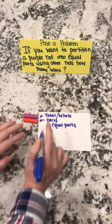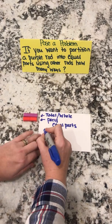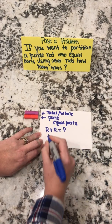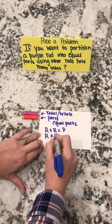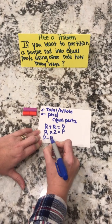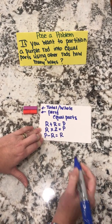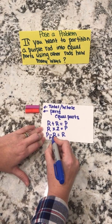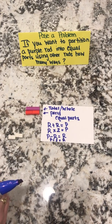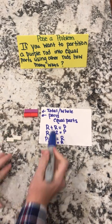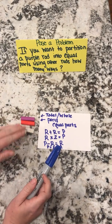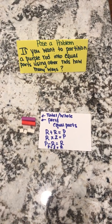So what operations could this show? Looking at the relationship between my purple and my red: a red plus a red equals a purple; a red times two equals a purple; a purple minus a red equals a red. And I can do that same structure for my white rods, really having students see that operational relationship between these colored rods.